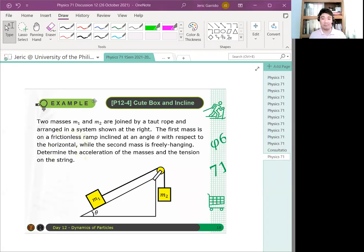So let's solve another problem. This is the last problem for this session. Two masses, M1 and M2, are joined by a taut rope and arranged in the system shown at the right. The first mass is on a frictionless ramp inclined at an angle theta with respect to the horizontal, while the second mass is freely hanging.